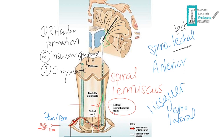The second synapse of the lateral spinothalamic tract is with the insular gyrus, which is responsible for the autonomic aspects of pain — symptoms like sweating, nausea, vomiting sensations, and tachycardia. The third synapse is with the cingulate gyrus, which is part of the limbic system and is responsible for the emotional aspect of pain. When you feel pain you get emotional. Interestingly, this also activates when you see someone else suffering, or when you simply imagine or remember a past painful experience.